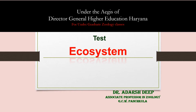In today's lecture, you have studied about the concept of ecosystem, components of the ecosystem, properties and function of the ecosystem, ecological energetics, energy flow, food chain, food web, trophic structure, ecological pyramids and concept of productivity. Now let us take some important questions related to this topic.